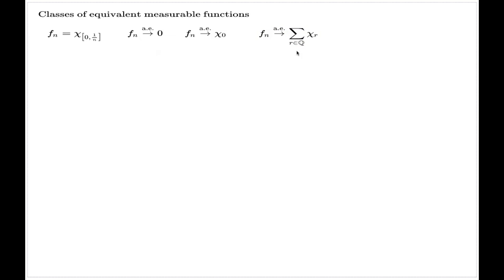This bad behavior of almost everywhere convergence — and by implication, a similar behavior applicable to measure topology convergence — explains why we need to consider not functions individually, but to group these functions into classes of equivalent functions.